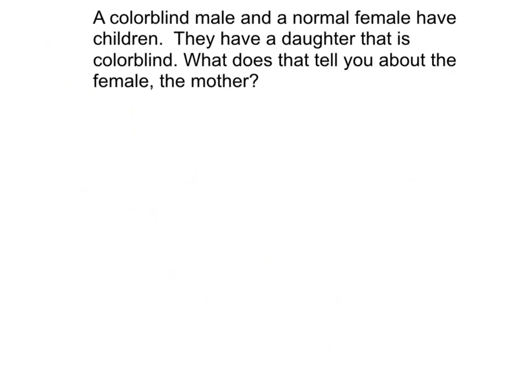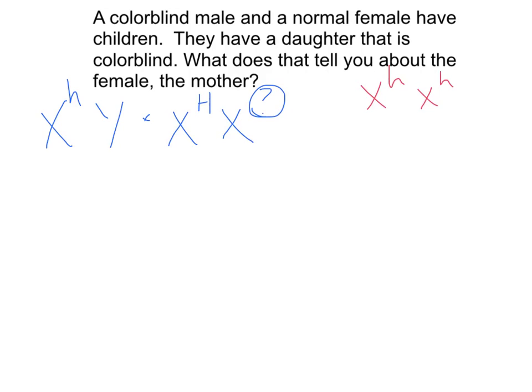Let's look at one more example. I've got a colorblind male and a normal female who have children, and one of their daughters is colorblind. What does that tell us about the mother? We know the daughter is colorblind, meaning she has to be homozygous recessive — she needs two recessive alleles to show the recessive trait. The colorblind dad only needs one X to show the trait. The normal female has to have at least one dominant allele, but we don't know what the second allele is yet. Based on what we know about the daughter, let's figure out what we can about the mother.